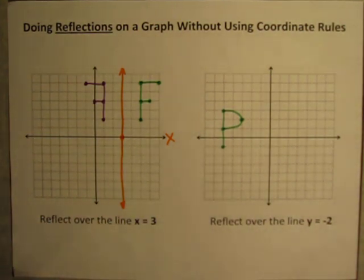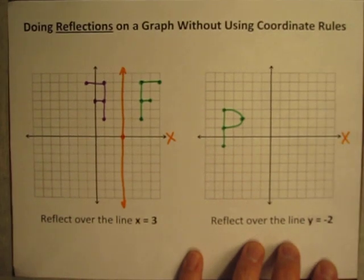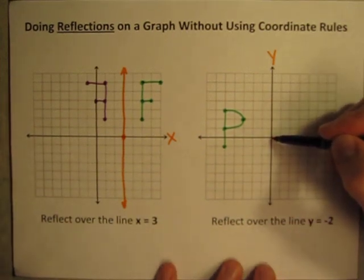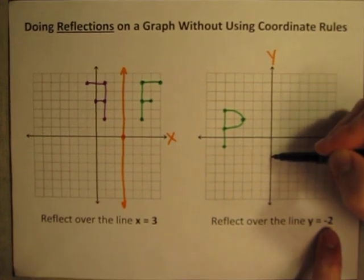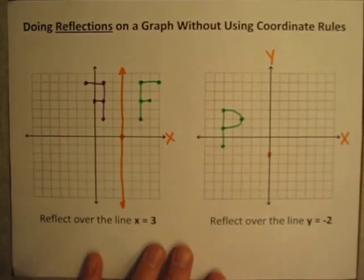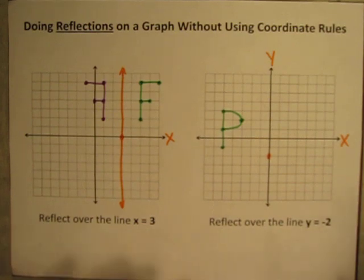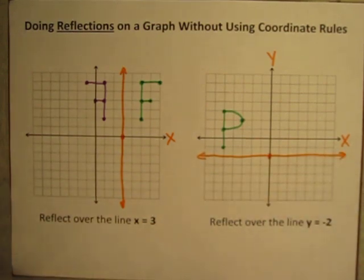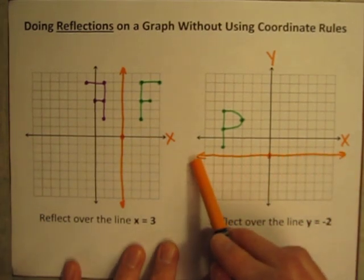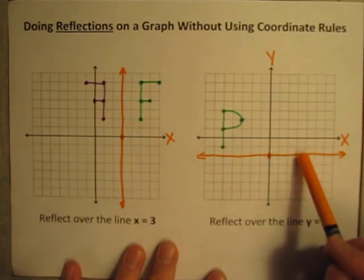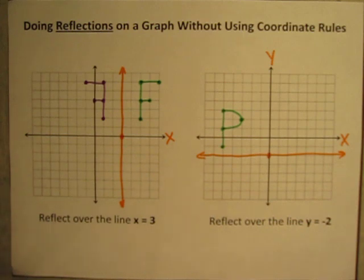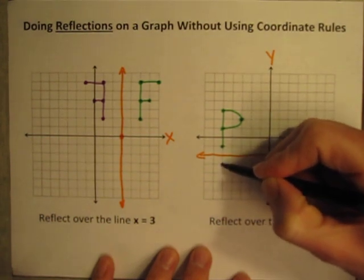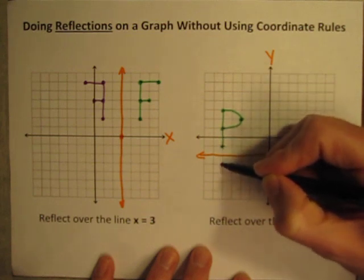Finally, let's reflect this letter P over the line y equals negative two. Here is our x-axis and here is our y-axis. Where is the line y equals negative two? Starting at the origin, I go on the y-axis to where y equals negative two — that means going two down below the origin. The line y equals negative two passes through that point. The x coordinates may change all along that line, but no matter where you are on it, the y coordinate is always exactly negative two. Now let's reflect one point at a time. This point is one above the line of reflection, so let's go one below. This one is three above, so go three below.